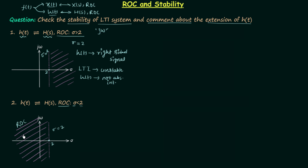The ROC exists on the left side of the leftmost pole, and σ = 2 is the leftmost pole since the ROC contains no poles. Therefore h(t) is a left-sided signal, because for left-sided signals the ROC exists on the left side of the leftmost pole. Regarding stability, the ROC includes the j-omega axis — the imaginary axis — therefore the LTI system is stable and h(t) is absolutely integrable.